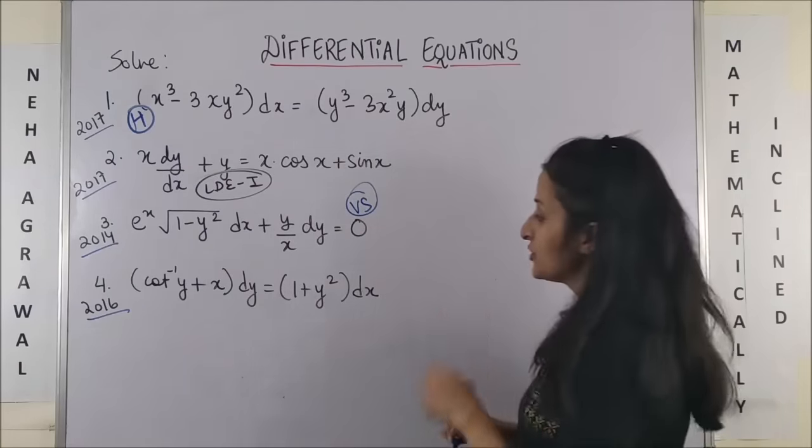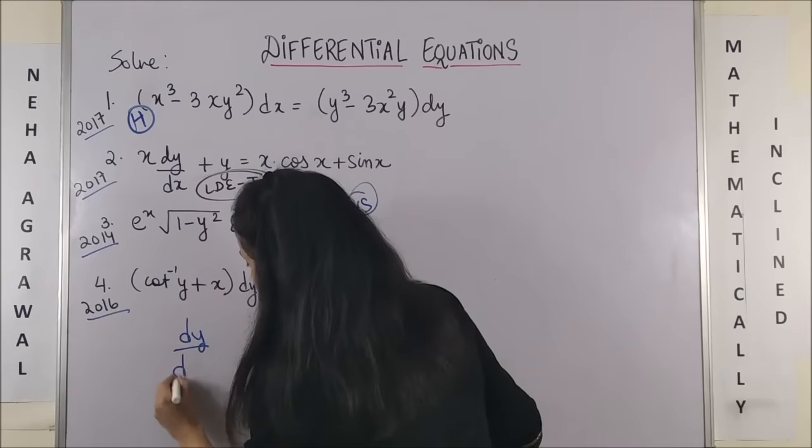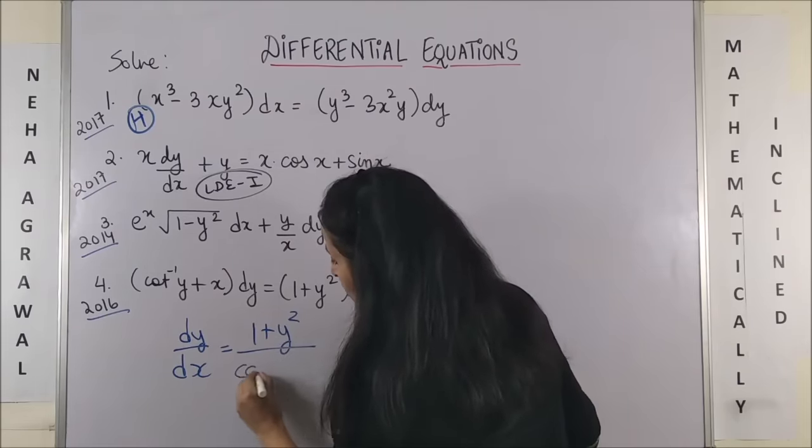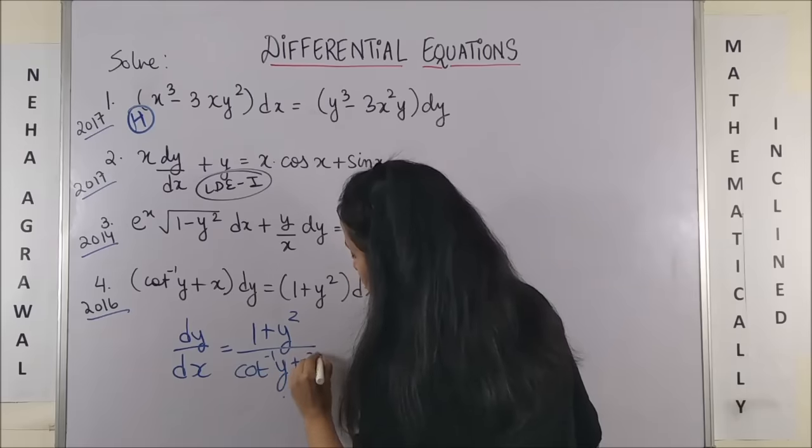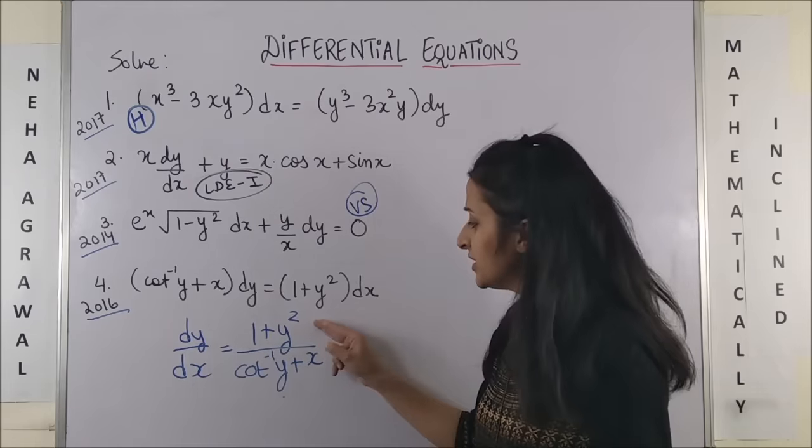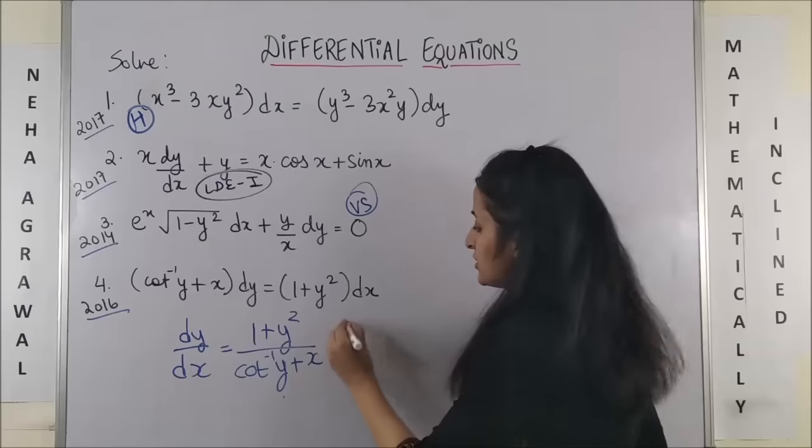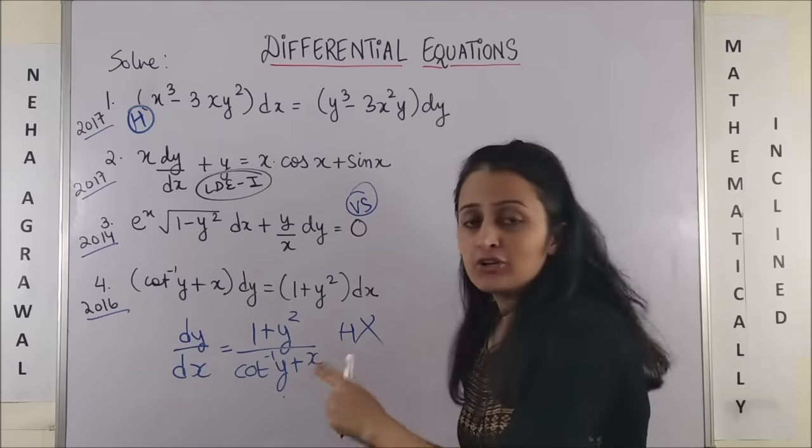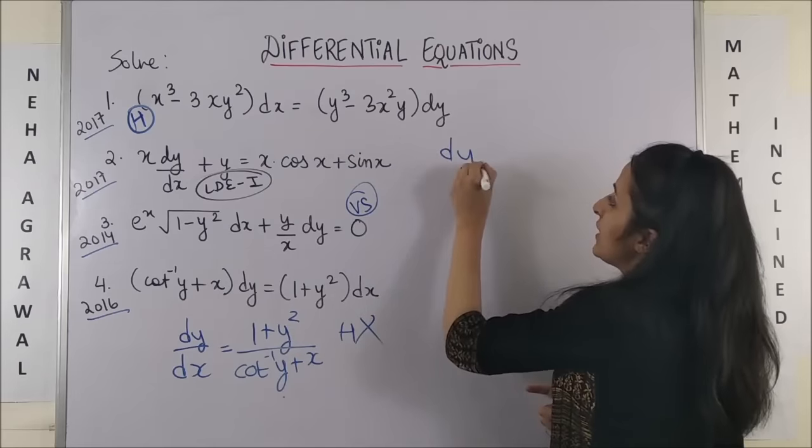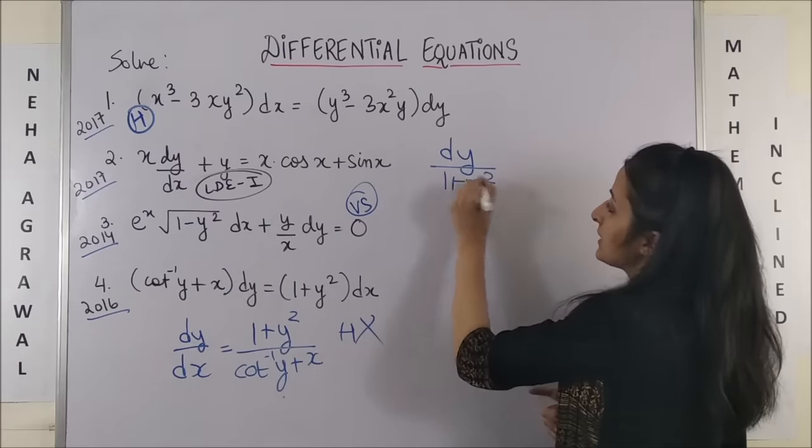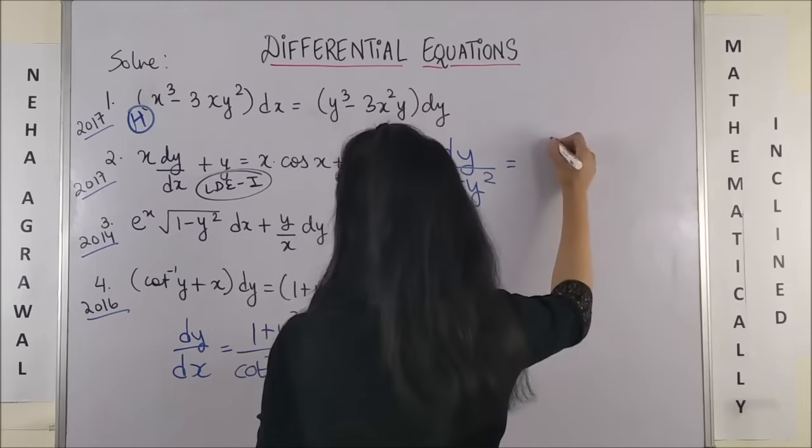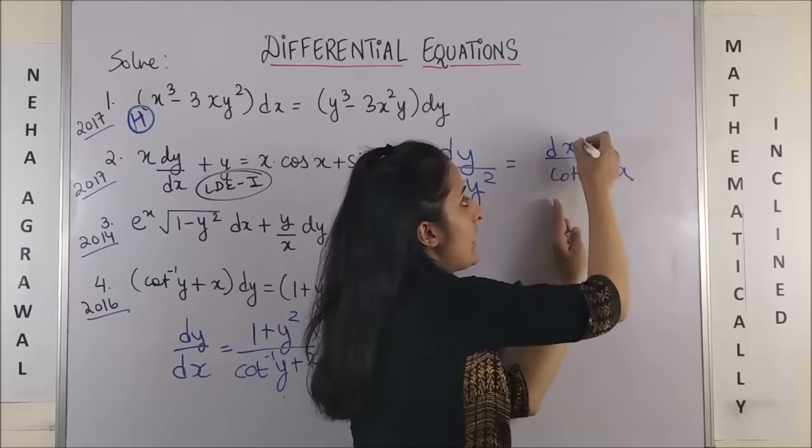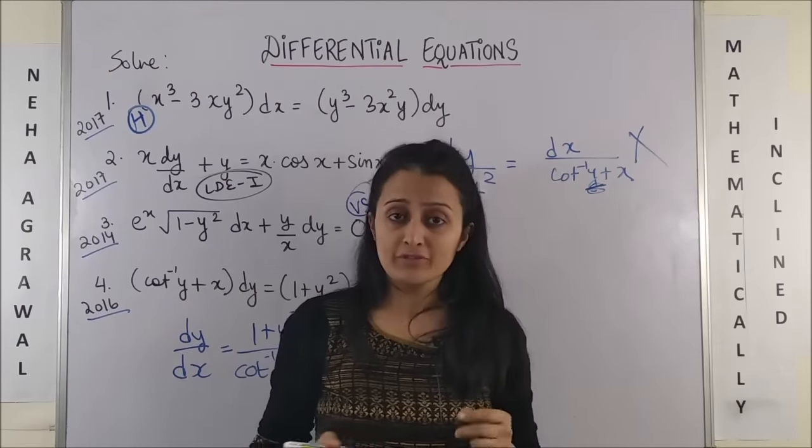Now, let's move to the fourth one. Here your dy by dx is going to be 1 plus y square upon cot inverse of y plus x. Again, constant term degree 2, degree 1, degree 1. So, not homogeneous for sure. Now, let's see variable separable. If I take this on this side and even this one, I cannot get rid of x. If I write this as dy upon 1 plus y square, on my right I will have dx upon cot inverse y plus x. This is sorted but here I have the term containing y also. So, definitely not your variable separable.